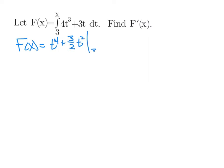So first of all, we can come up with a better expression for what F of x is. Because it's a definite integral, when we integrate 4t cubed plus 3t, we should have t to the fourth plus three halves t squared. And then we'll evaluate this from 3 to x.